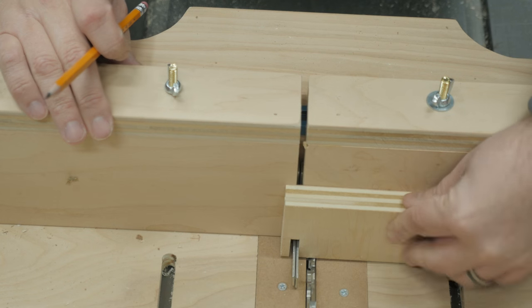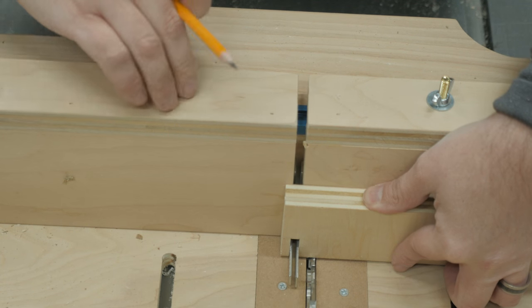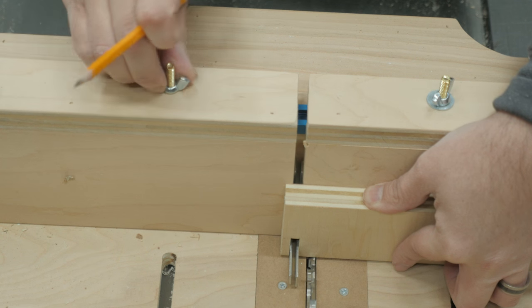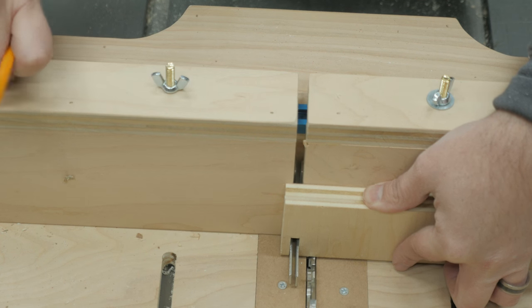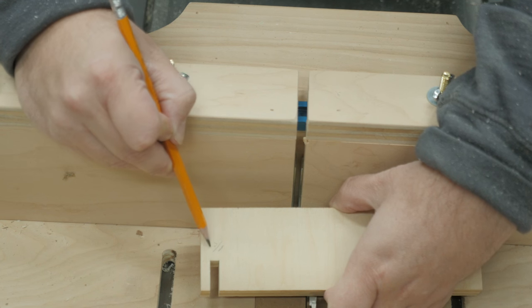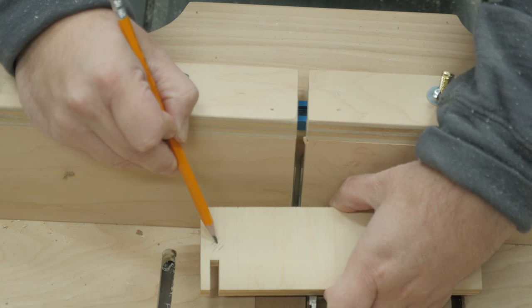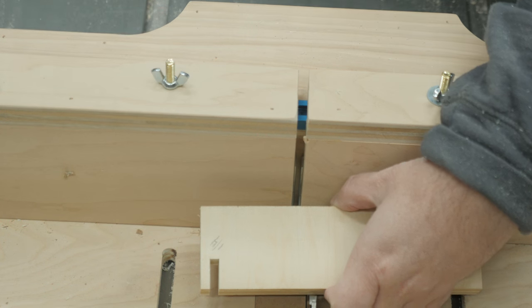Now use the slot you just cut in that block to set the distance between the two metal fingers on the jig, locking it in place when you're finished. Save this scrap of wood, because it will make it even faster to set up to cut the same joint again next time.